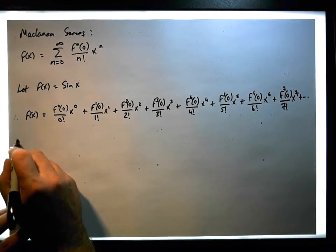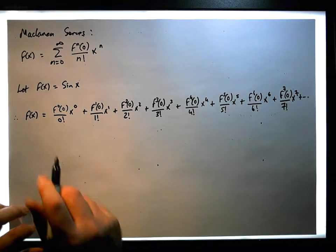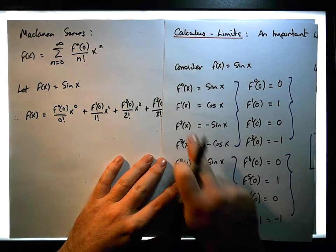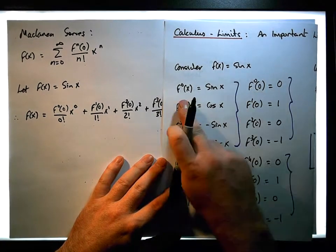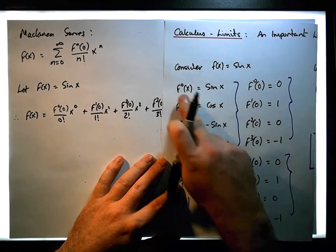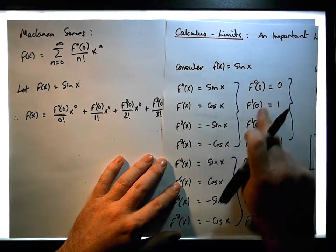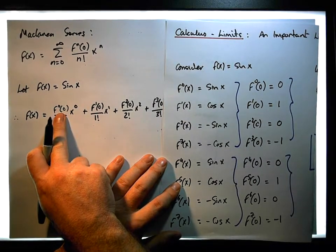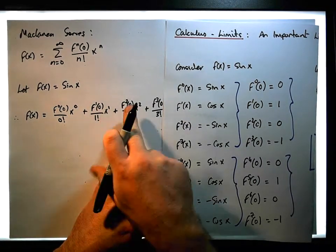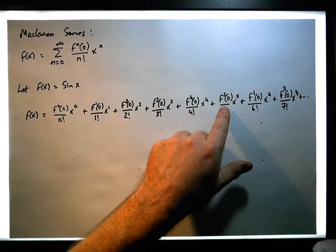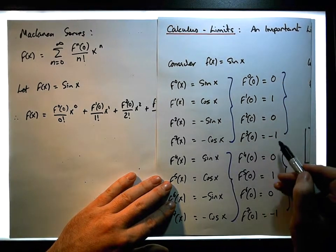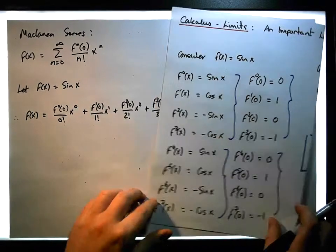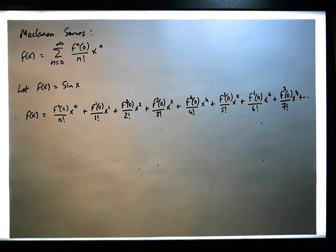Based on the derivative identities we constructed, we know the values estimated at 0. So f⁽⁰⁾(0), f⁽¹⁾(0), f⁽²⁾(0), f⁽³⁾(0), f⁽⁴⁾(0), f⁽⁵⁾(0), f⁽⁶⁾(0), f⁽⁷⁾(0) are going to be this particular sequence of numbers: 0, 1, 0, −1, 0, 1, 0, −1, as we go through this expansion.